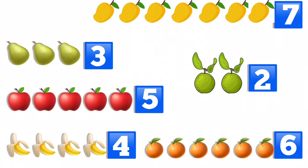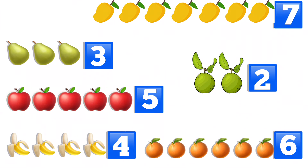Now look at the different types of fruits on the screen. Children, tell me how many types of fruits are there. There are six types of fruits. There are apples, mangoes, bananas, oranges, pears, and guavas. Which fruit occurs in the maximum number? It is mango — it is seven in number.